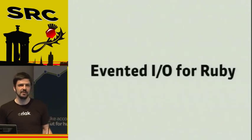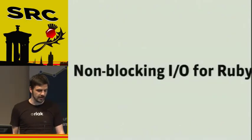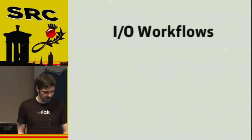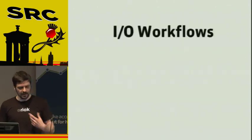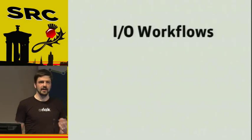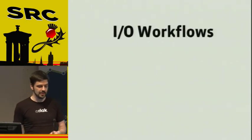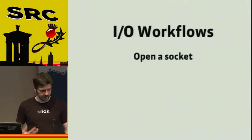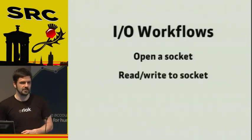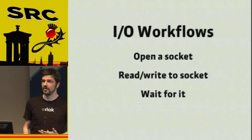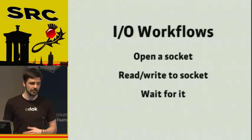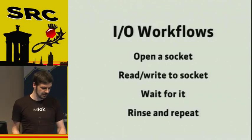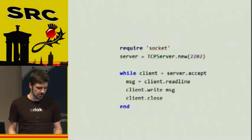EventMachine is basically evented I/O for Ruby and it's non-blocking I/O for Ruby. We're going to look into good detail about what that means in a minute. In a traditional I/O workflow, like when you're talking to a network, you basically have stuff like: you open a socket in the very literal sense, you read and write through the socket, and you wait for something to happen — for data to go out or data to come in.